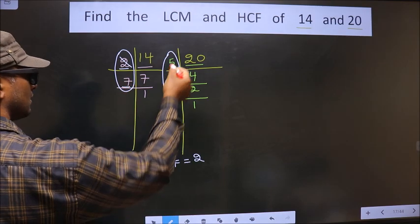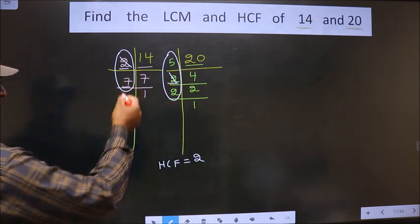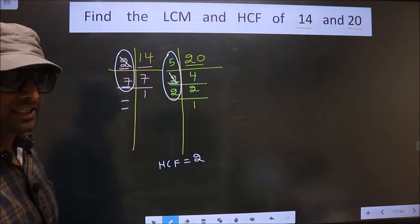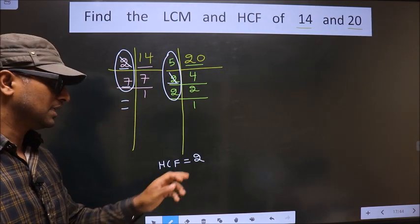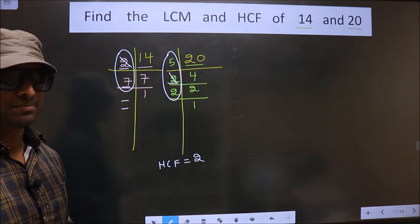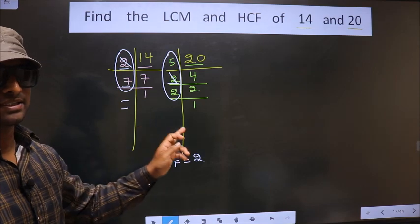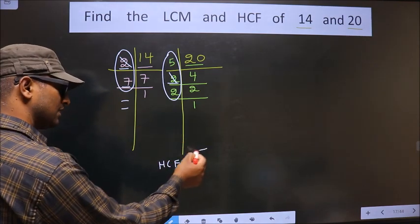Next number is 7. Do we have 7 here? No. No more numbers are left. Therefore we have only one number, 2, present in these two places. So this is our HCF.